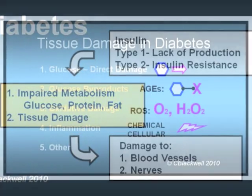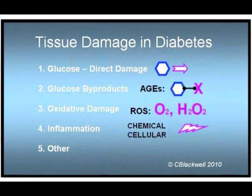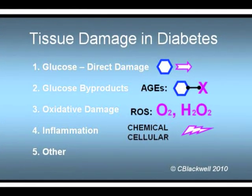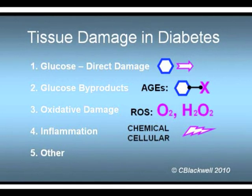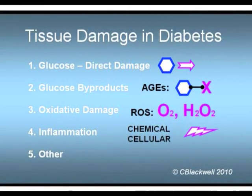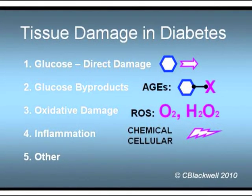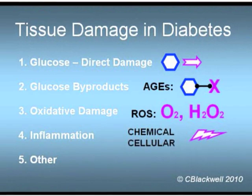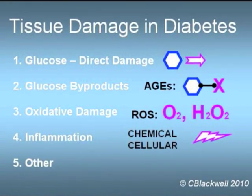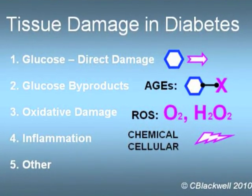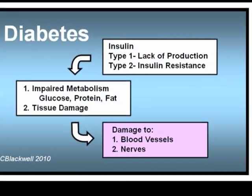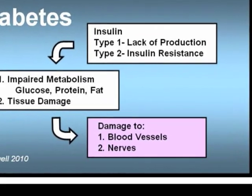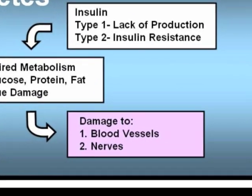Tissue damage can come directly from elevated glucose and chemical byproducts of glucose. In diabetes, there are other mechanisms of damage — for example, excess oxidation and increased systemic inflammation. So diabetes has widespread effects, the chief result being damage to nerves and blood vessels.